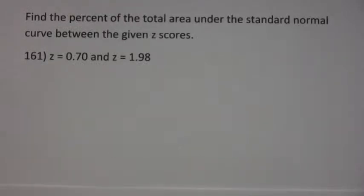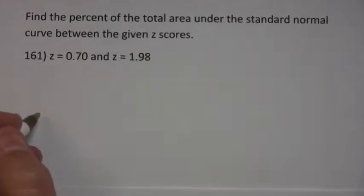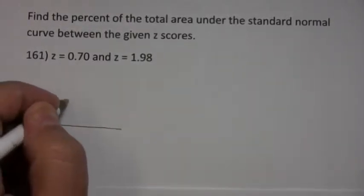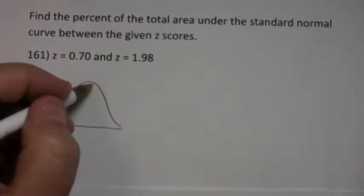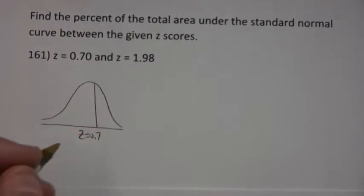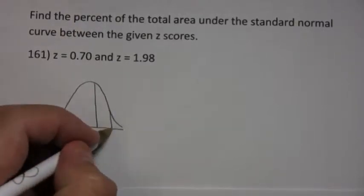Find the percent of the total area under the standard normal curve between the given z-scores. This time, the values are 0.7 and 1.98.